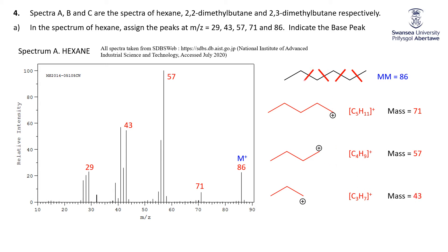And then finally, 29. Well, 29 is C2H5, putting this split here and looking at what's right there — mass 29. You might also possibly see the 15, that little blip right there. However, CH3 fragments are really, really unstable, and so you really don't see them very often in mass spectra.